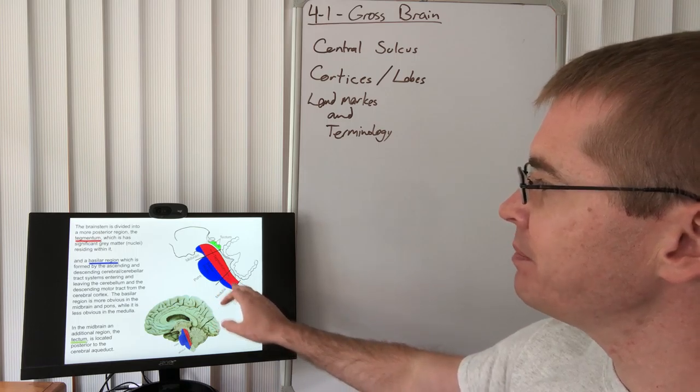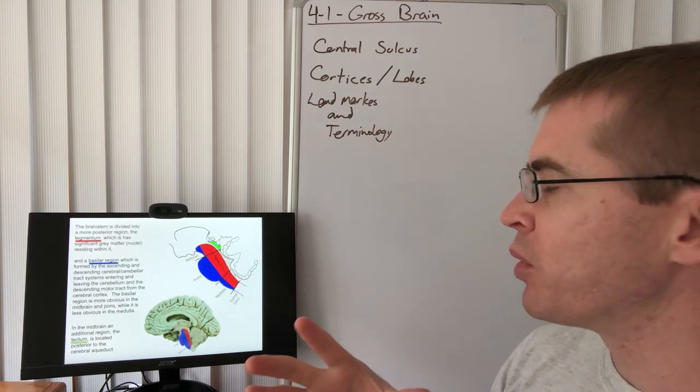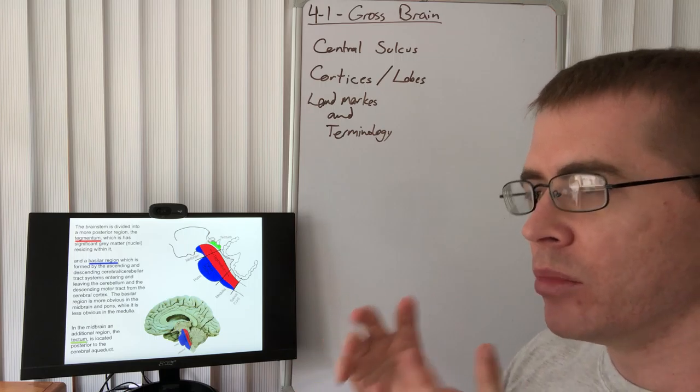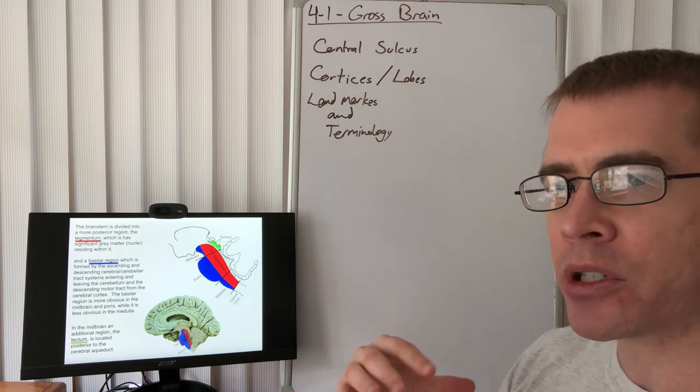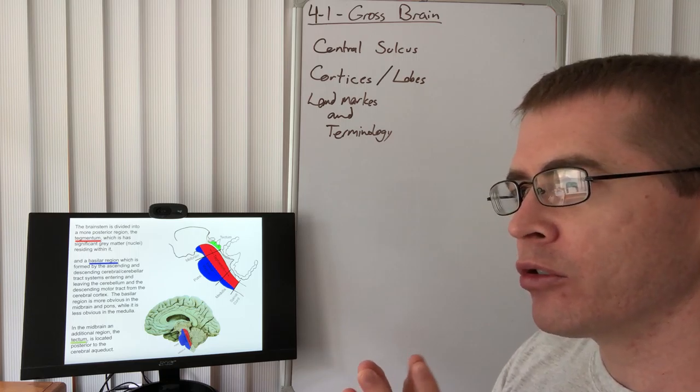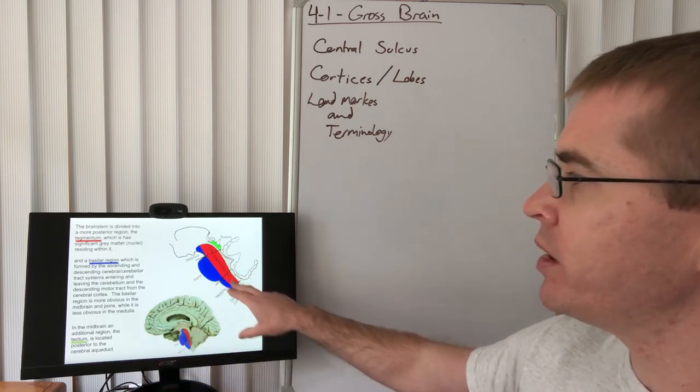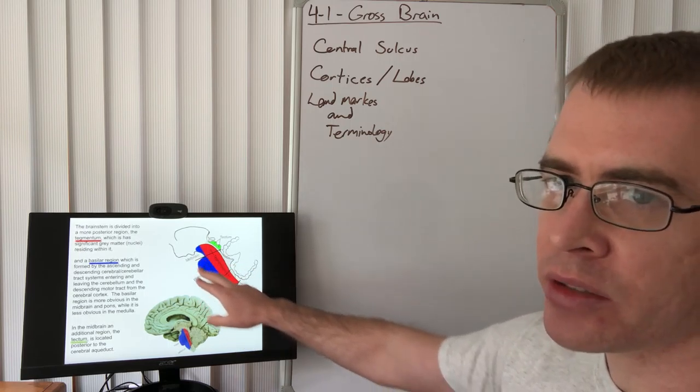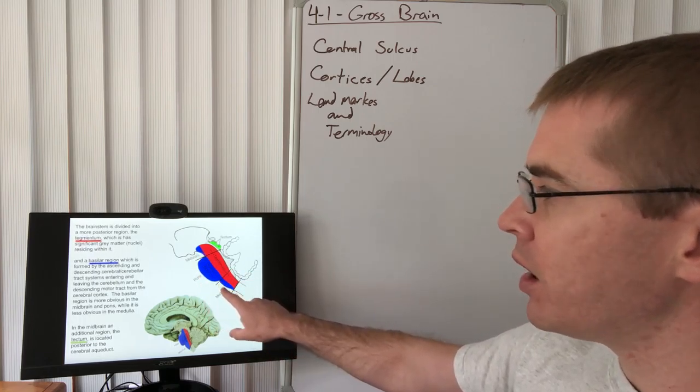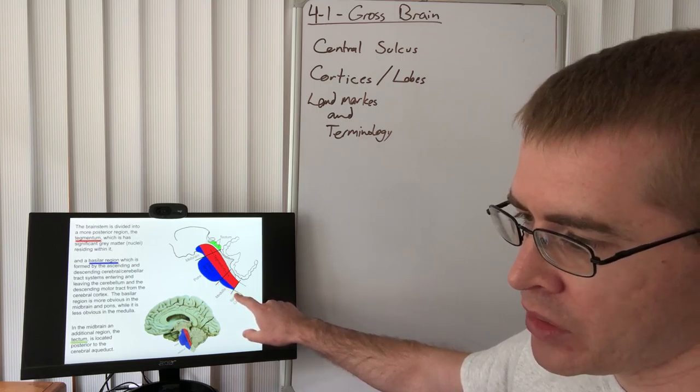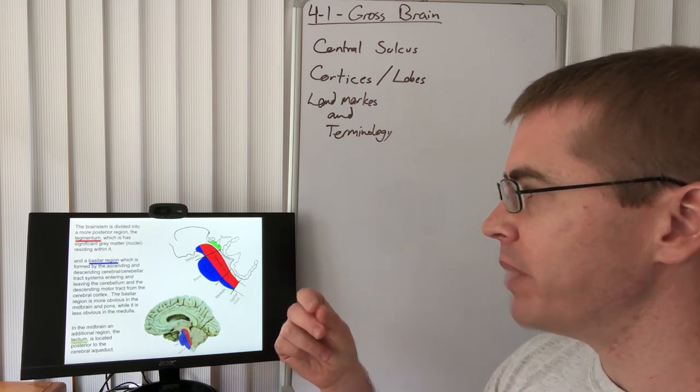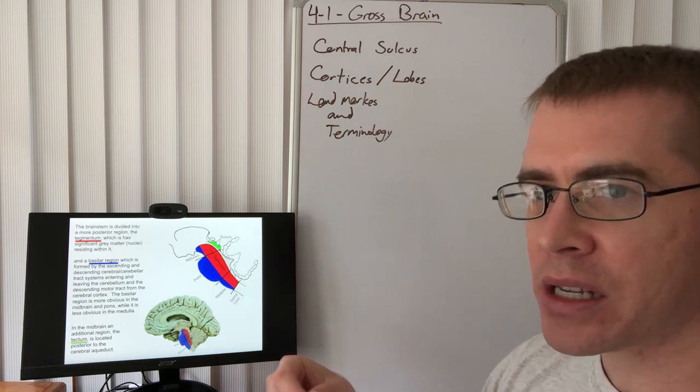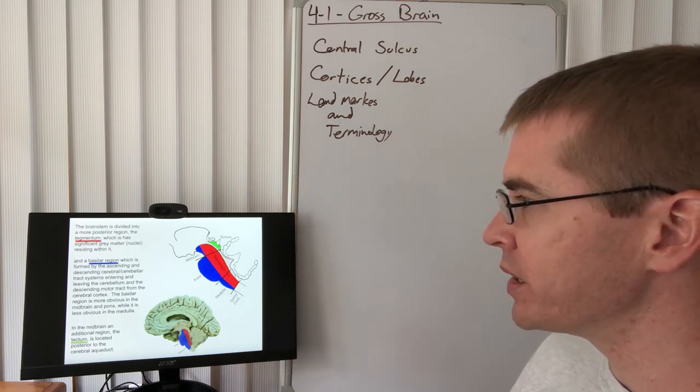The tegmentum is the large portion of the brainstem composed mainly. So this is the region that has most of the nuclei, the brainstem nuclei. So when we're talking about the cranial nerve nuclei, you will find those within the tegmentum of the brainstem for the most part. Now the basilar region contains most of the ascending and descending fibers. So the pyramids are part of the basilar medulla. And those pyramids contain the corticospinal tracts as they descend into the spinal cord, as an example.